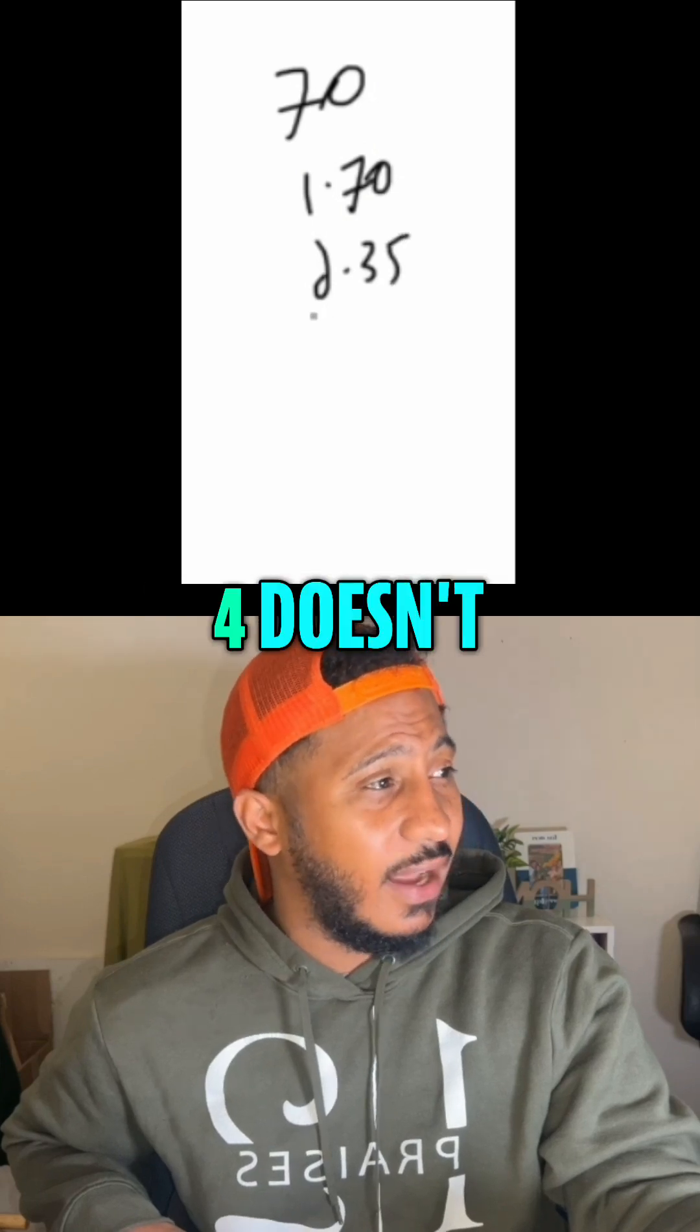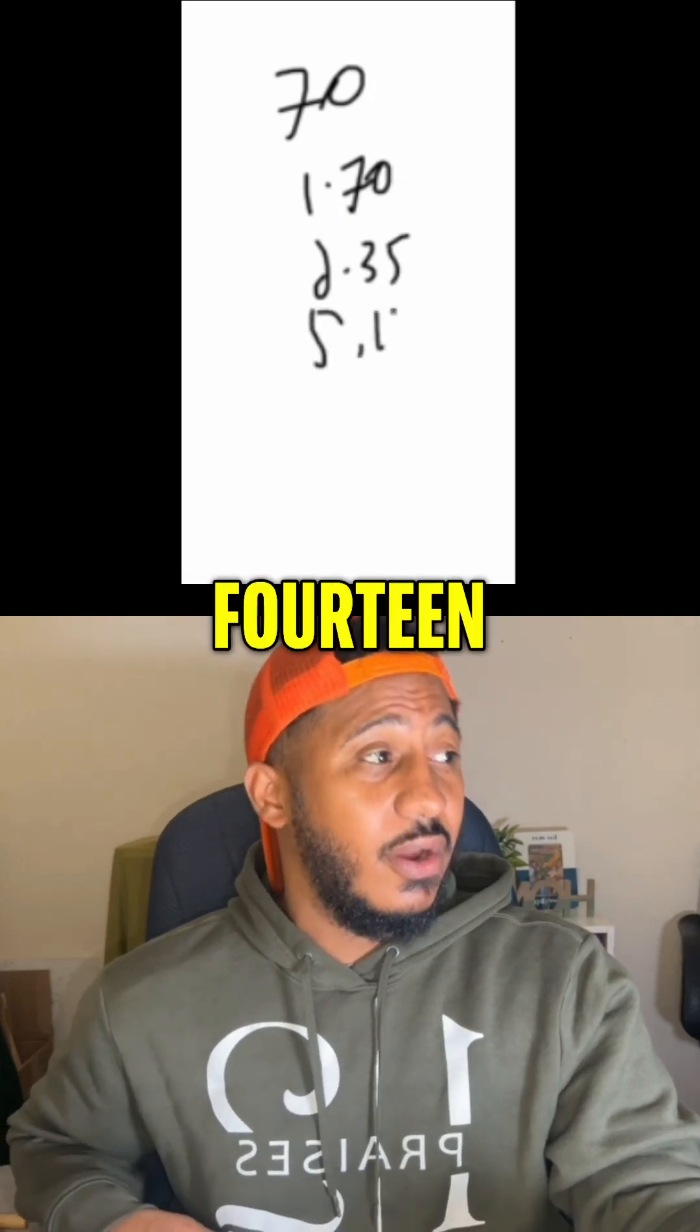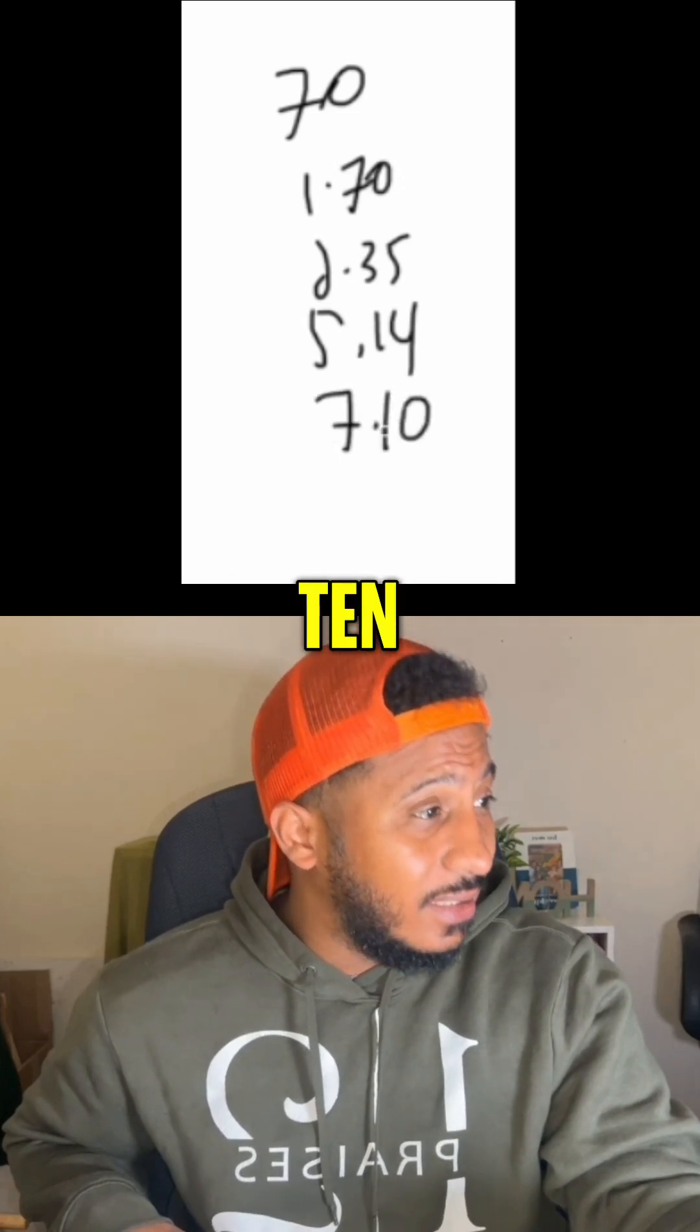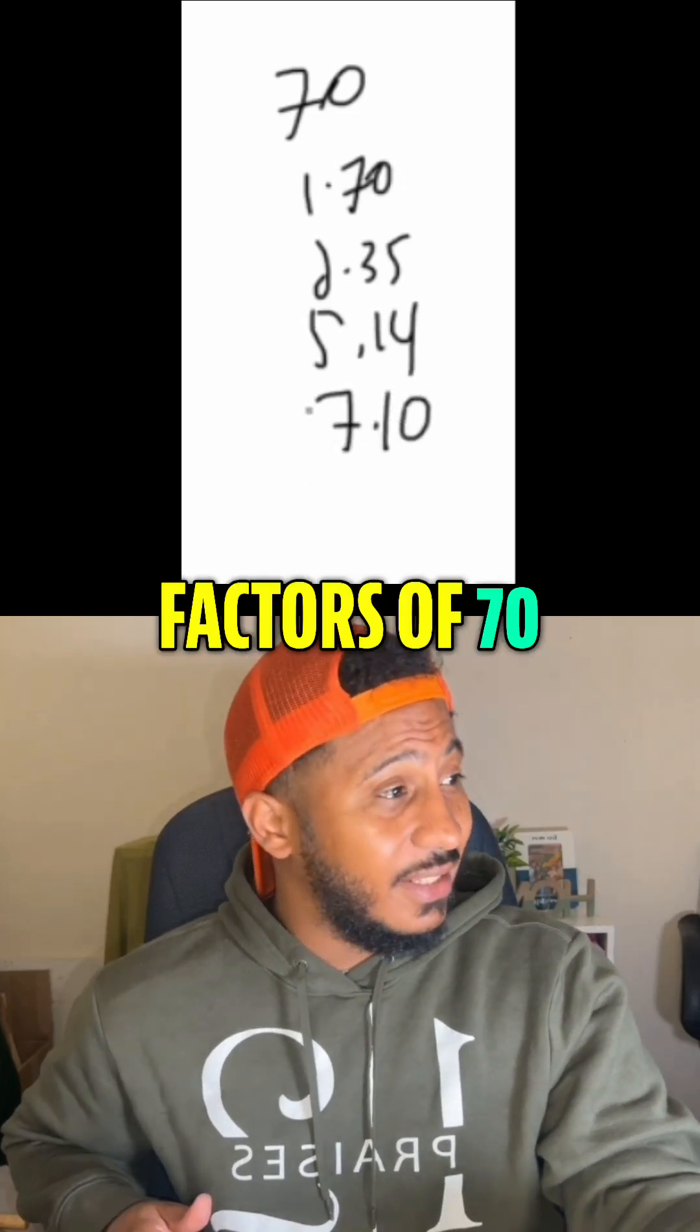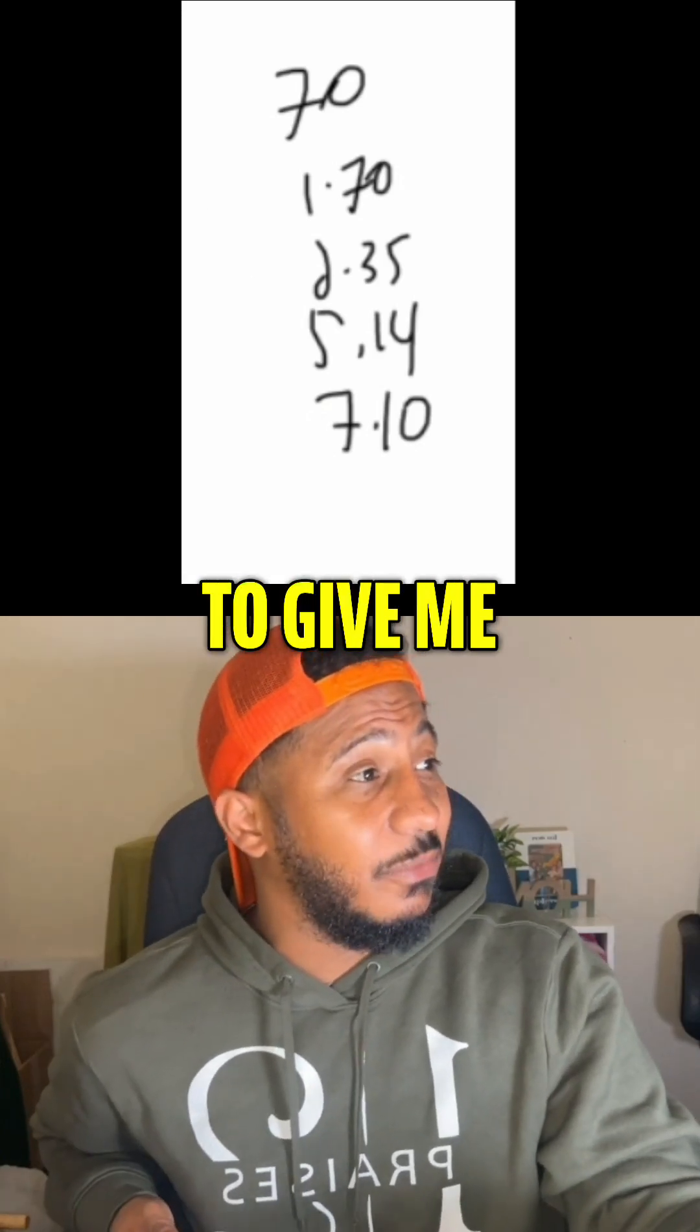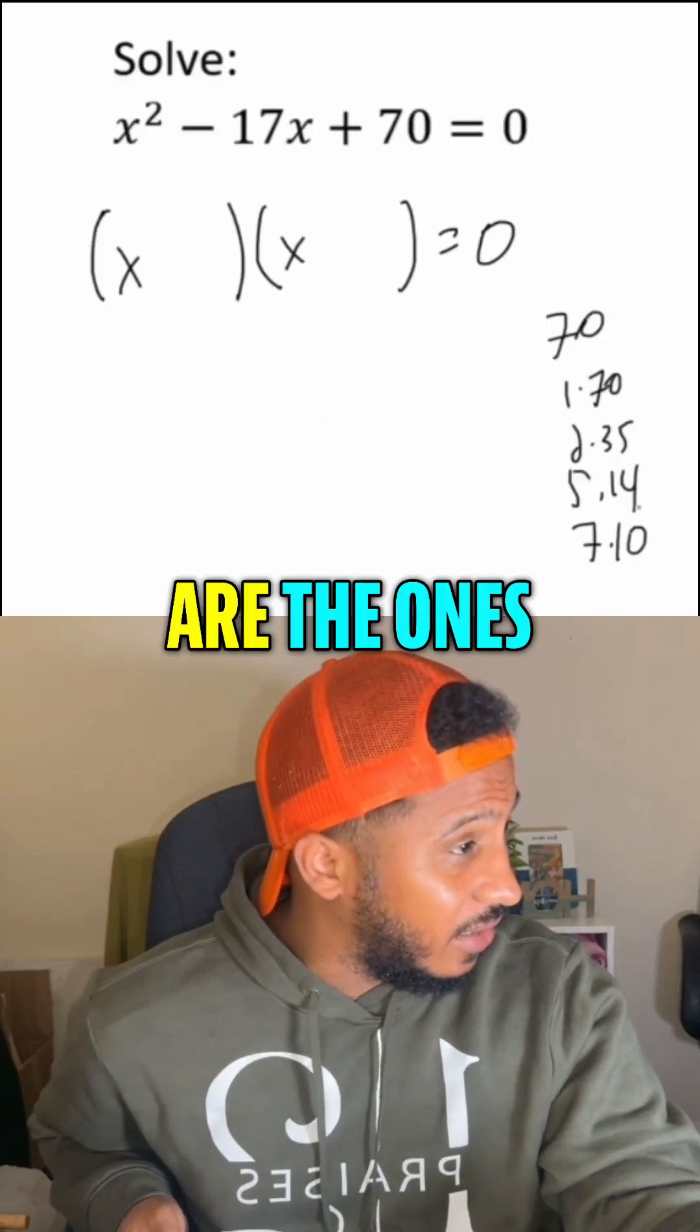two and 35, three doesn't work, four doesn't work, but five and 14. Six, no, seven and 10, eight and nine don't work. So I think that's all the factors of 70. And so we pick the ones that combine to give me this 17. So seven and 10 are the ones.